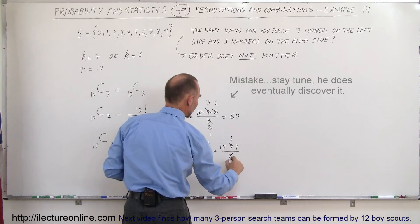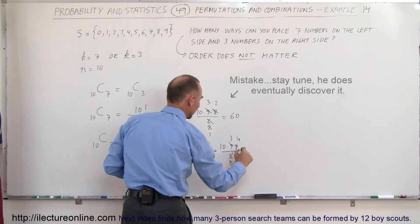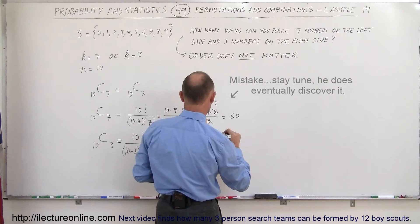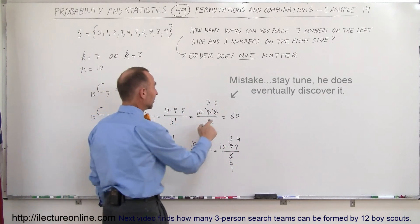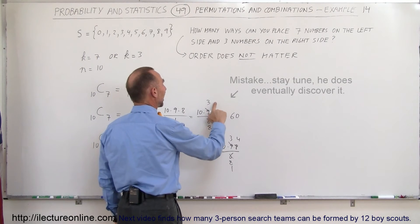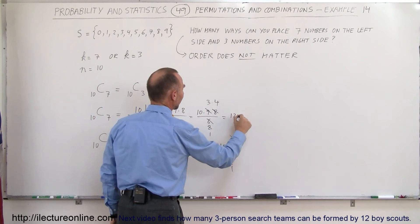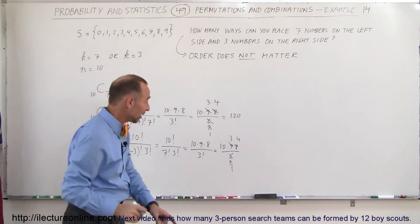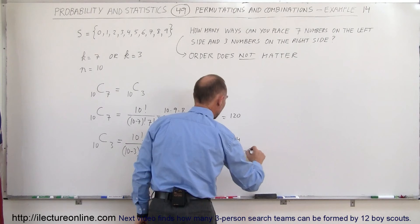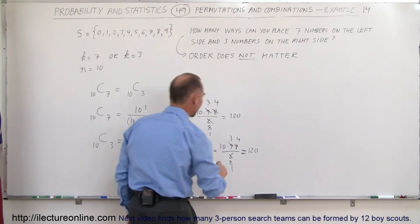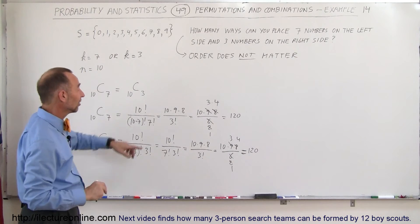Again, simplifying: 9 and 3 give 3 and 2, and then 8 divided by 2 gives 4 — wait, I just caught an error. I divided 8 by 2 earlier and got 2, but it should be 4, which means the result is equal to 120. I'm glad I did it the second way, because now I realize I made a mistake — this is also 120. So the answer is 120 in both cases.